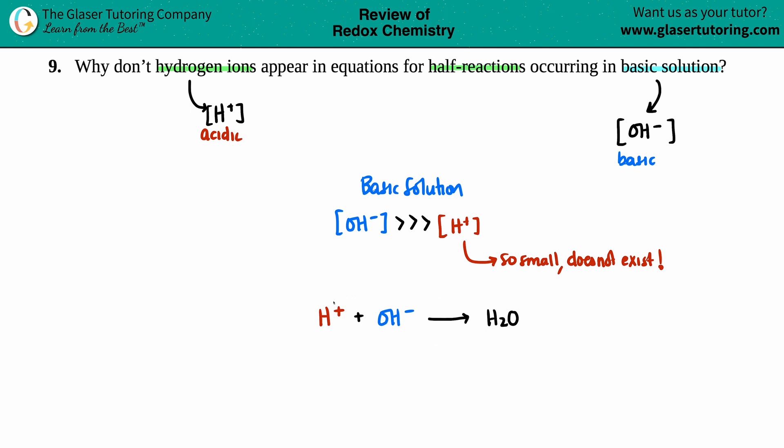So anytime that you have H plus even added to a basic solution, that OH minus, the hydroxide, is going to scoop it right up and make H2O and you won't even have any more left. So that's why hydrogen ions don't appear in any half-reactions because their values are just way too small in a basic solution. And even if they did exist only a little bit, the hydroxide is going to take care of it and convert it into H2O and be done with it.